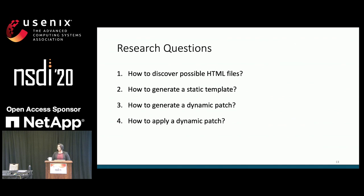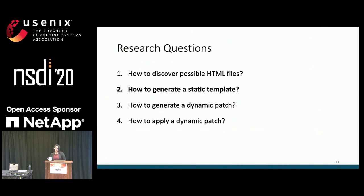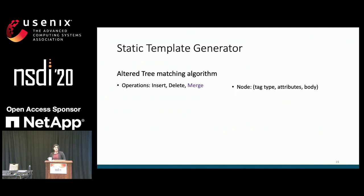There are several challenges to realize the Fox architecture. We need techniques to generate and apply both templates and patches. In this talk I'll mostly focus on questions two through four, but the paper provides details on how static program analysis techniques can efficiently identify the possible HTML versions for a given page.